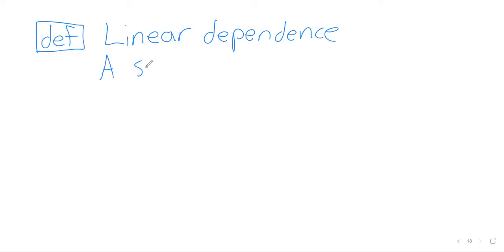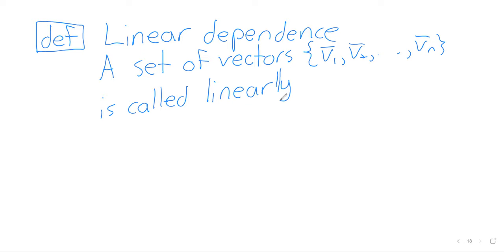A set of vectors V1, V2, up to Vn is called linearly dependent